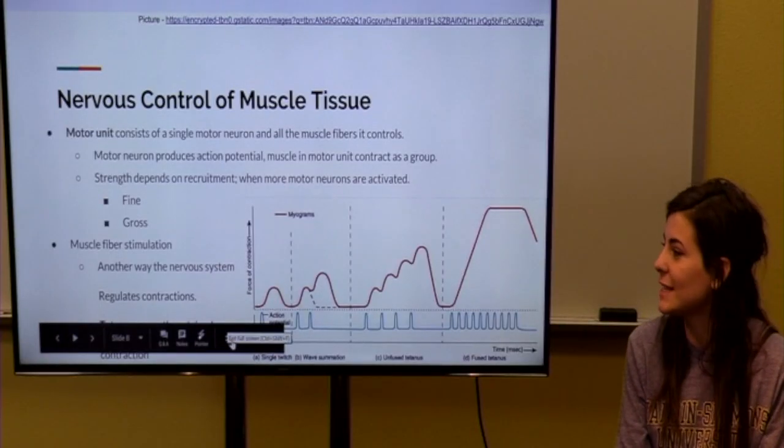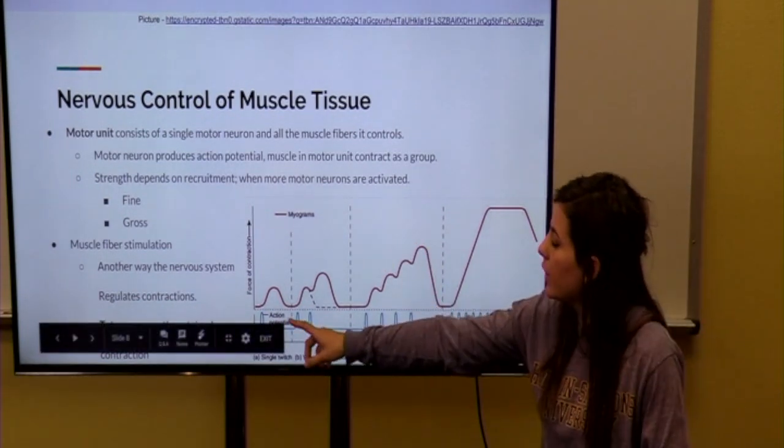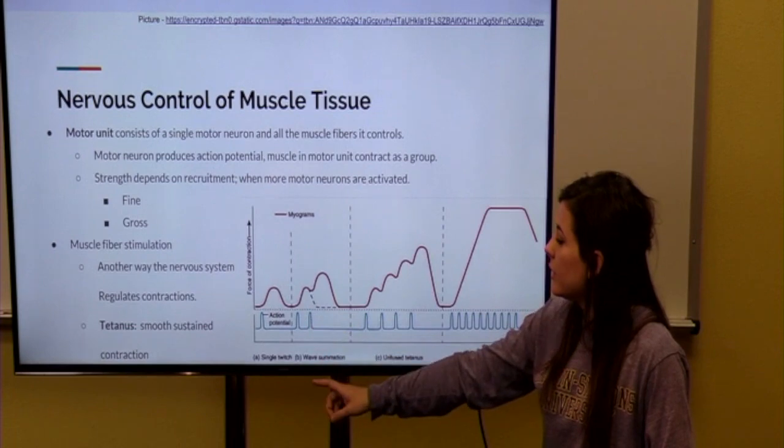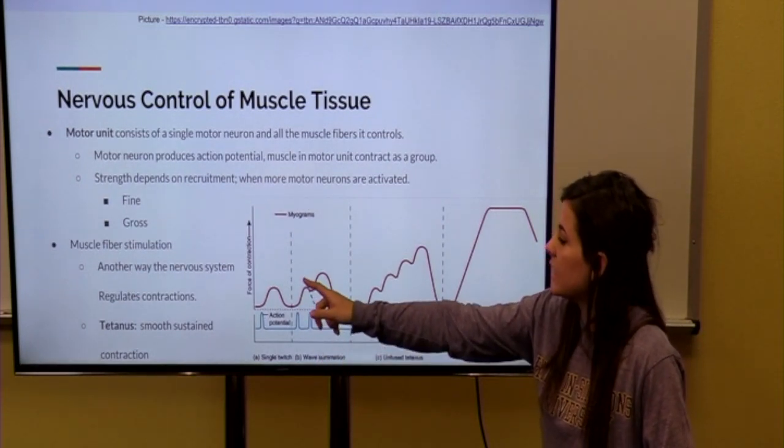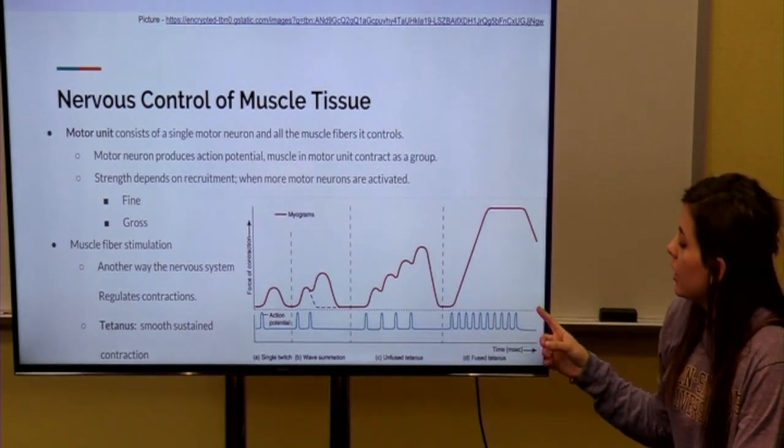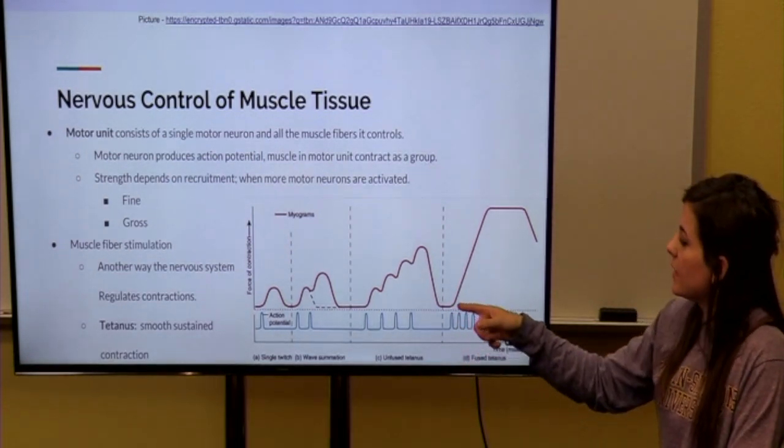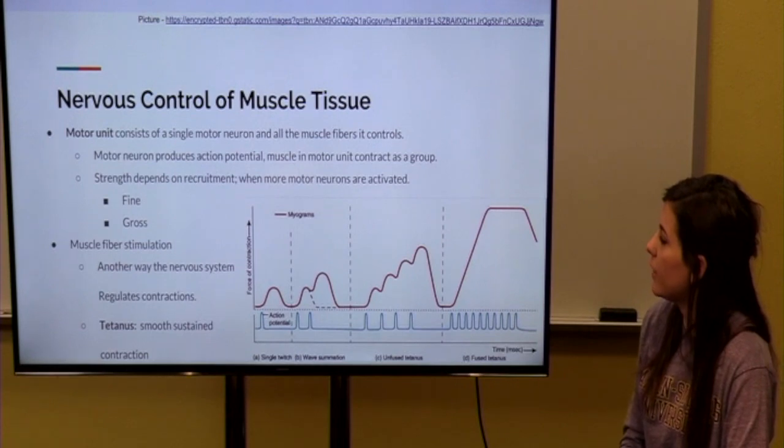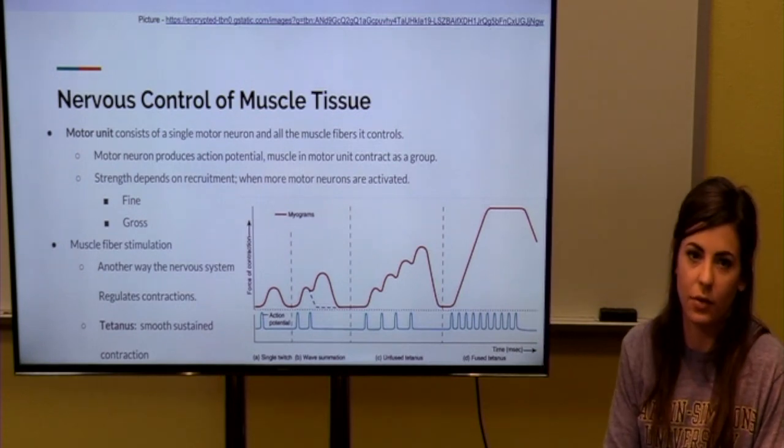Next, I want to talk about muscle fiber stimulation. This is another way that the nervous system regulates contractions. As you can see here, whenever an action potential is released, it causes the muscle to contract and then it relaxes. But whenever an action potential is sent right after one has just finished, you can see this progression of the contraction getting higher. And so, over here, you can see that the action potentials are released one after another, causing what is called a tetanus. And this is whenever the contraction suddenly rises, it reaches a climax. And then, wherever the muscle contracts, it begins to fall because it can only hold the contraction for so long.